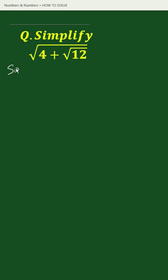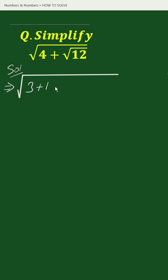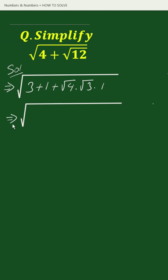The solution: square root of 4 can be written as 3 plus 1, and square root of 12 can be written as square root of 4 times square root of 3 times 1. This equals the square root of the following expression.